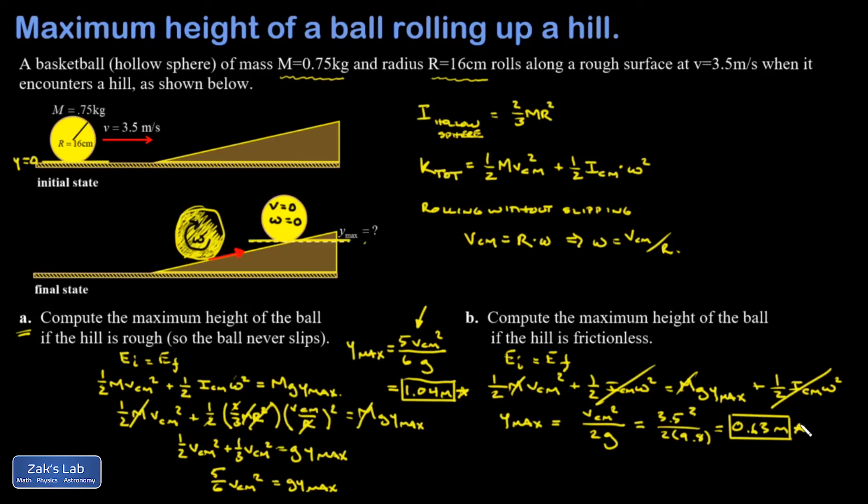In part B there was no mechanism to stop the rotation and convert it into gravitational potential energy. It just kept spinning and sliding on the ice the whole time. So I end up with a lower height, and this represents just the translational part of the energy being converted into height instead of both types of energy.